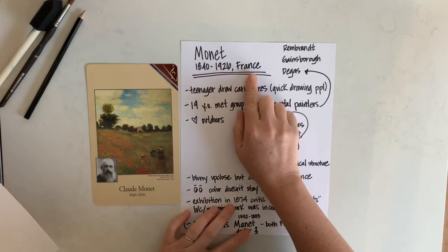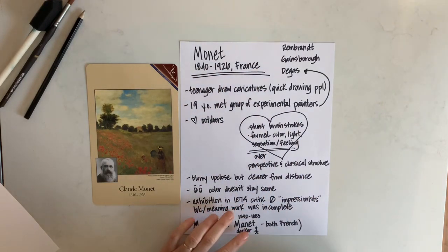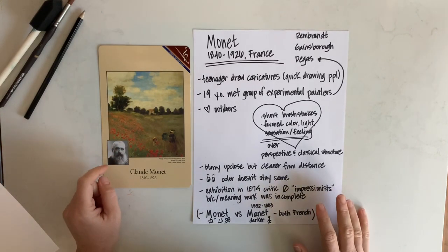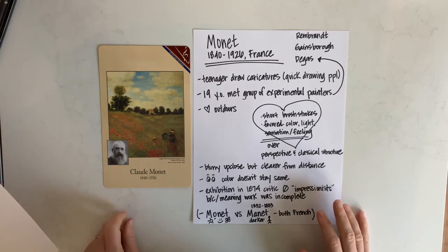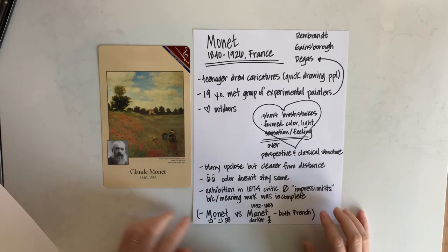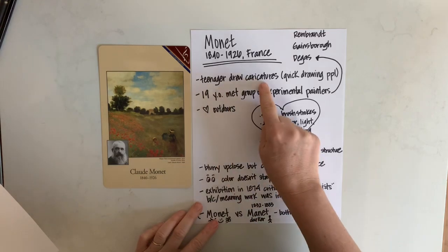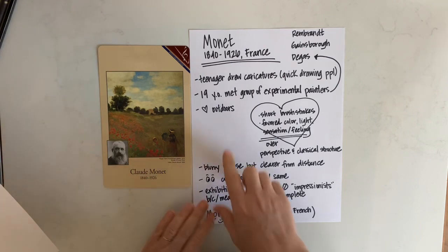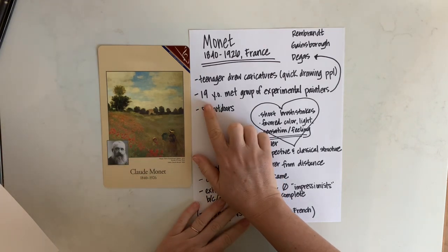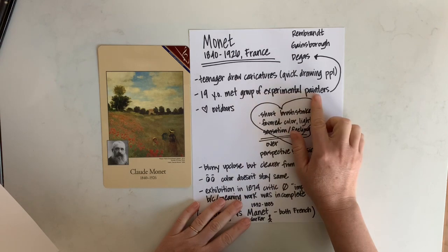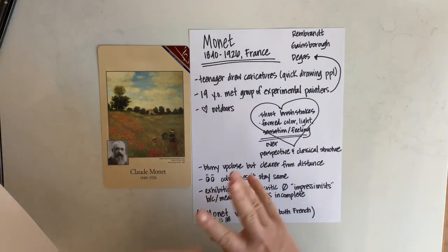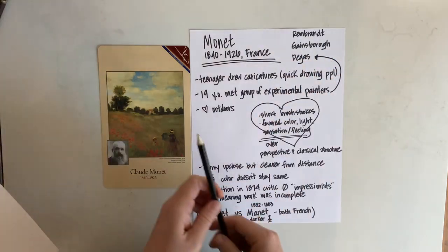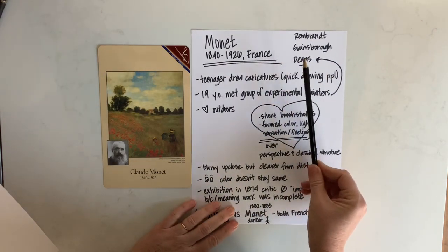Monet was born in France and lived from 1840 to 1926. On our artist card, we have a photograph of him — photography did come around in the early 1800s. As a teenager, he drew caricatures, which are quick drawings of people, and got noticed for that. When he was 19, he met a group of experimental painters. One of those painters he met was Degas — remember, Degas and the dancers.